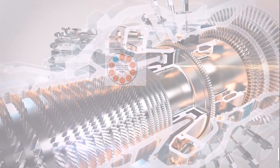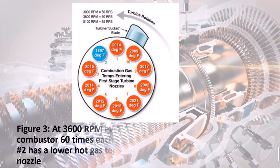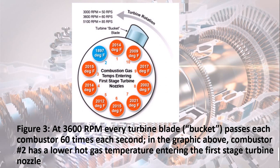At 3,600 RPM, every turbine blade and bucket passes each combustor 60 times each second. In the graphic above, combustor number 2 has a lower hot gas temperature entering the first stage turbine nozzle.